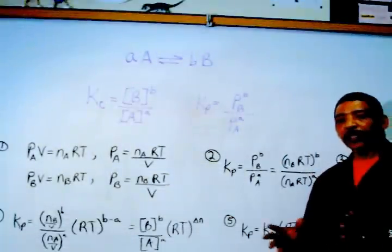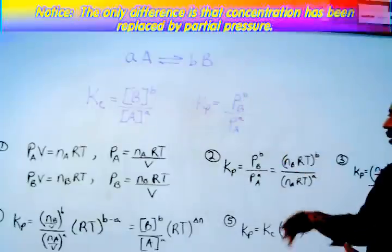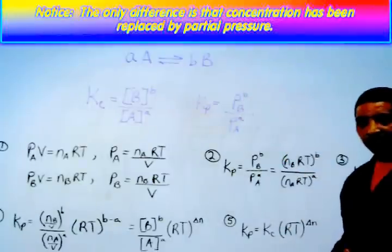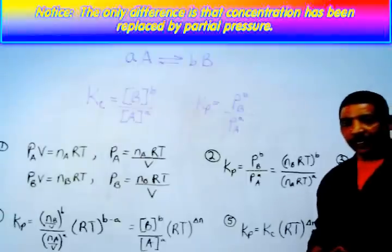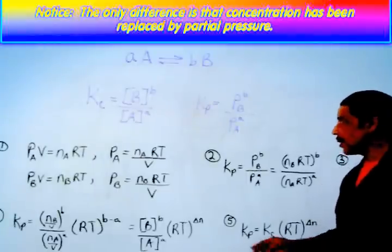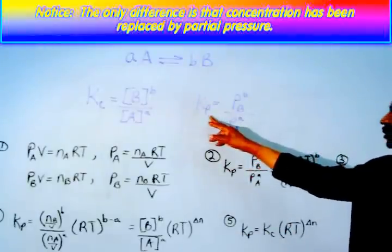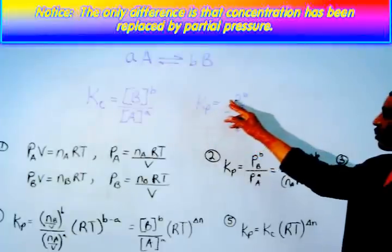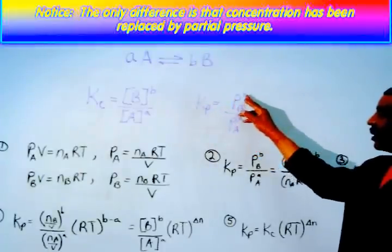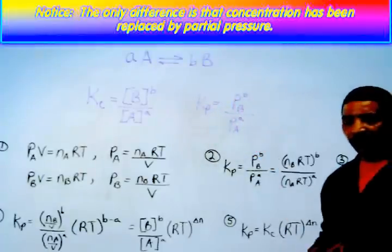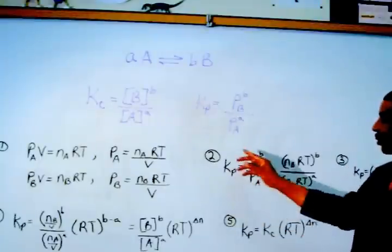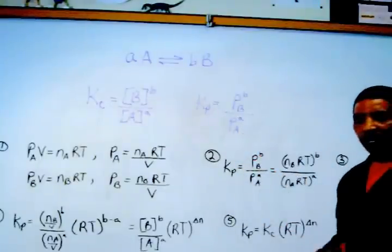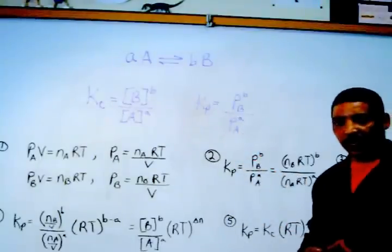Now let's assume that both A and B are gaseous. In this case, a Kp expression may be written where Kp is equal to the partial pressure of B raised to the b power, divided by the partial pressure of A raised to the a power.